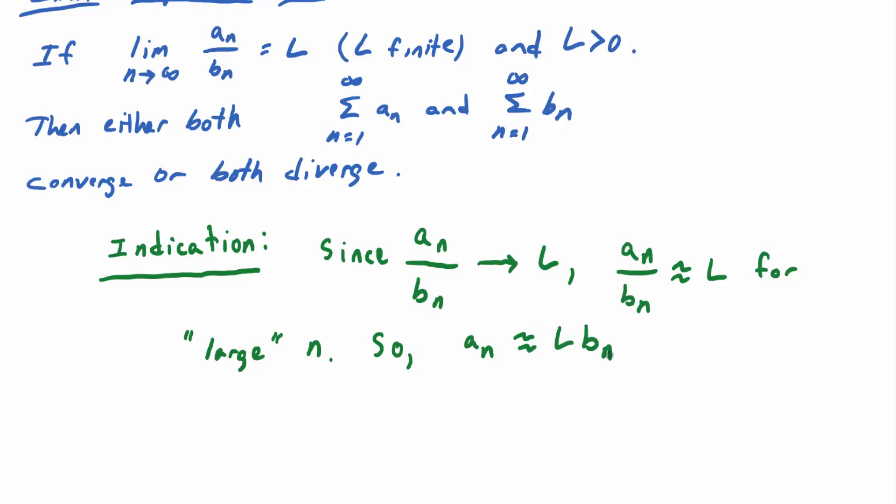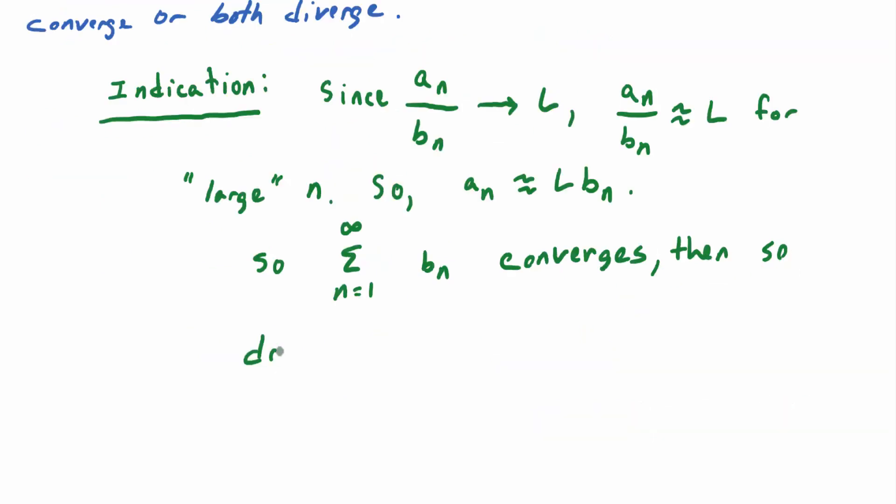Yeah? So here's more hand waviness then. Certainly then, so if the sum N goes to infinity of L times b_n converges. You know what? Let me just do it with the b_n. So certainly if the sum from N equals 1 to infinity of b_n converges,